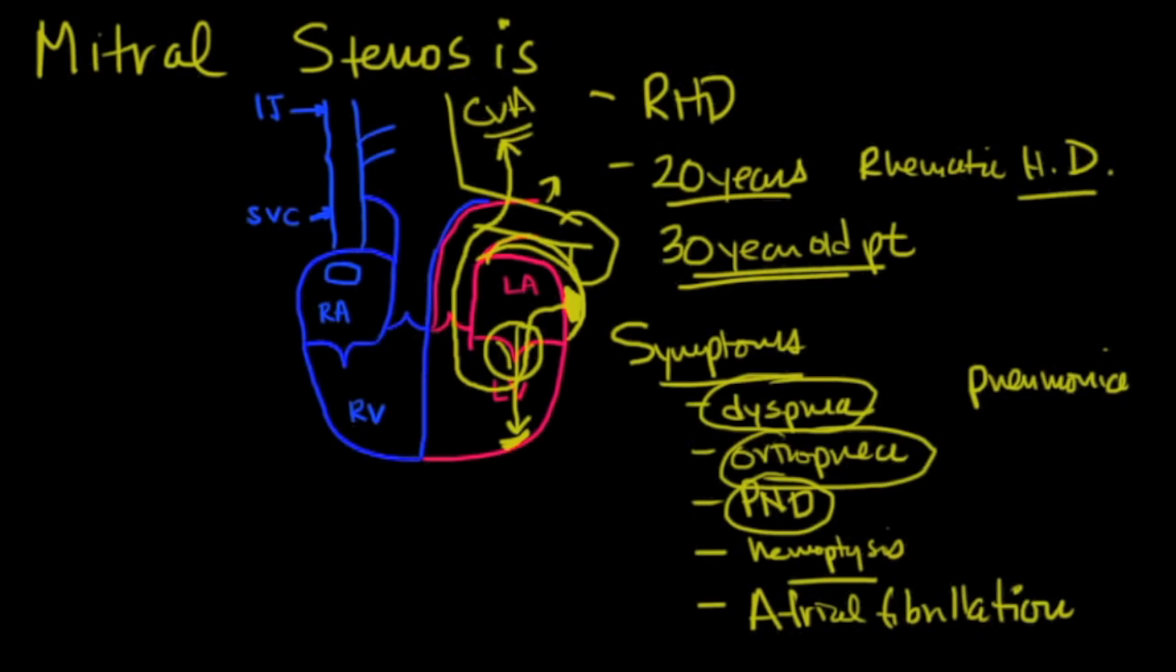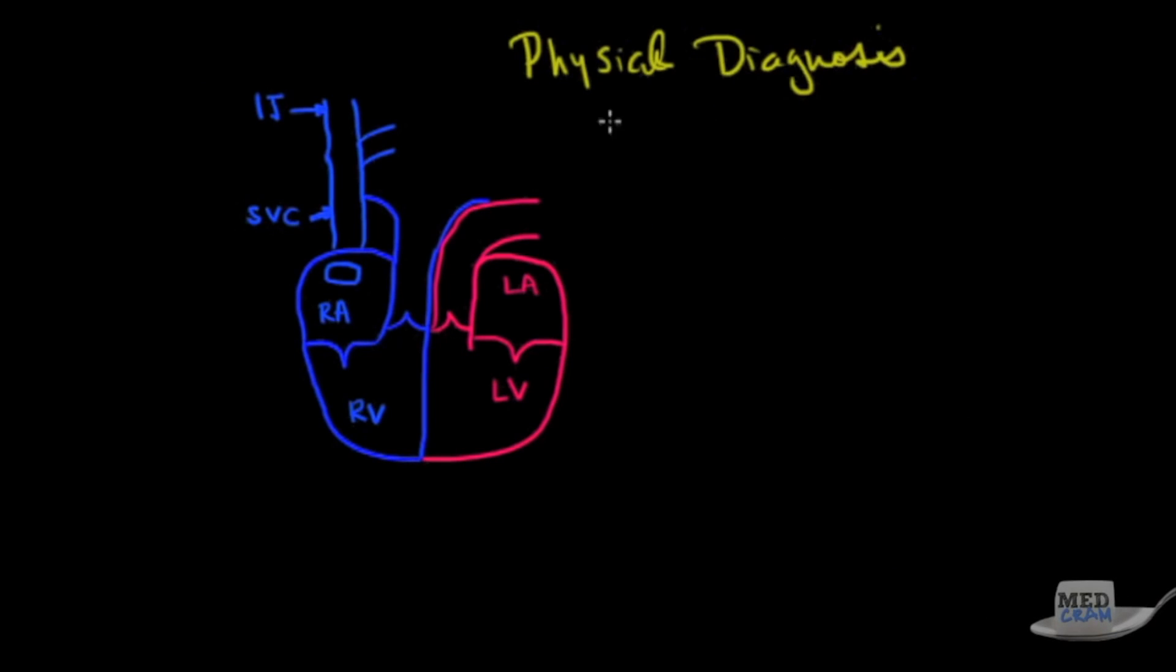In terms of physical diagnosis, you're going to notice that S1 is going to be louder because of the stenosis of the mitral valve. When you have systolic ejection of the left ventricle and closure of the valve, if it's relatively stenosed it's going to cause a louder S1. The other thing is the opening snap.